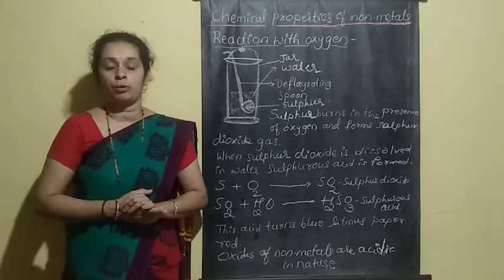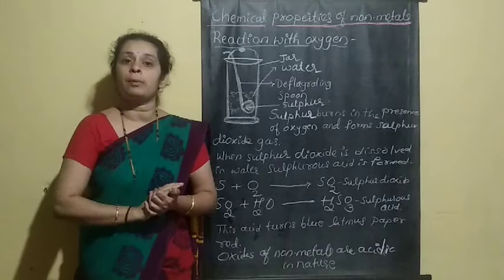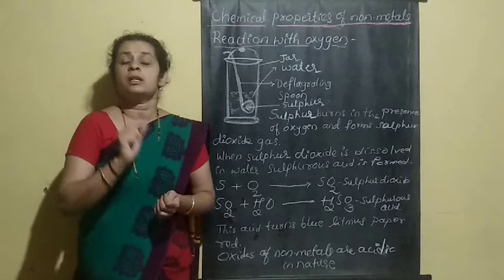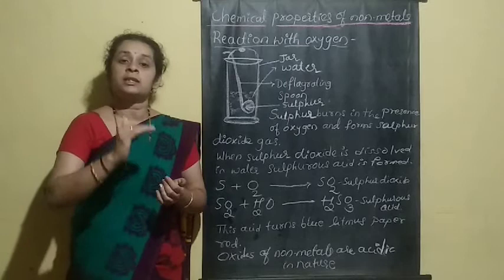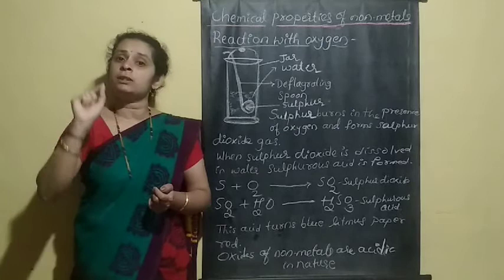In the deflagrating spoon, you take some sulfur powder — a yellow-colored powder. When you burn this sulfur powder, it starts burning and produces a gas. That gas is nothing but sulfur dioxide, formed when sulfur reacts with oxygen.